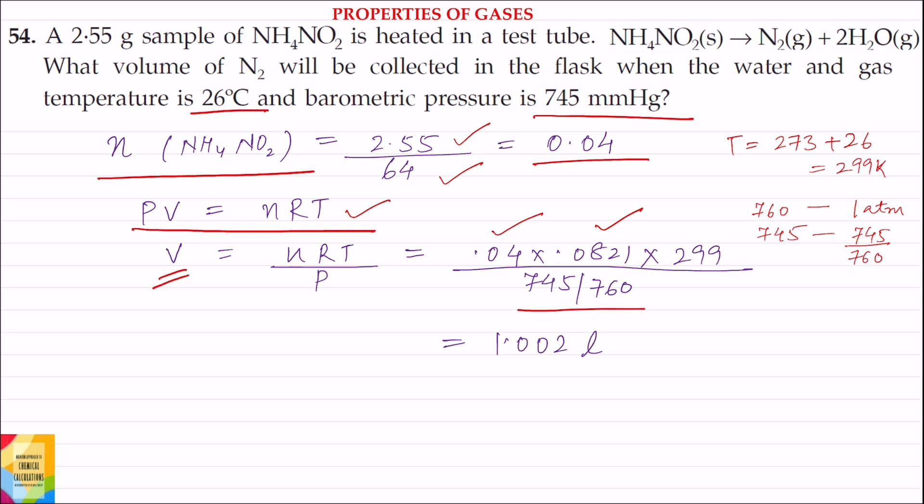So pressure ki value put kareinge atmospheres meh. So putting the values and solving, the value for the volume is 1.002 liters.